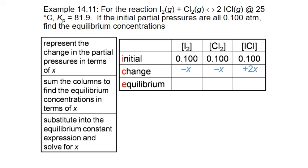Next, we add together the initial concentrations and the change terms to get equilibrium concentration formulas in terms of X. For the reactants, that's 0.100 minus X. For our product, iodine monochloride, it's 0.100 plus 2X.